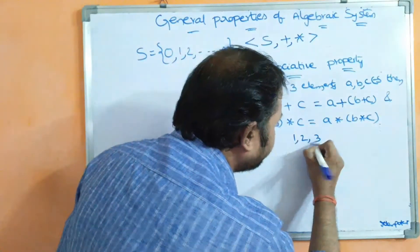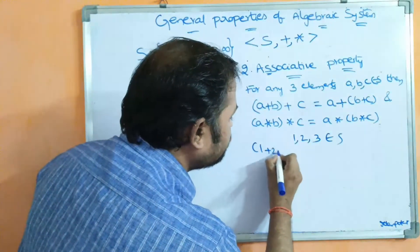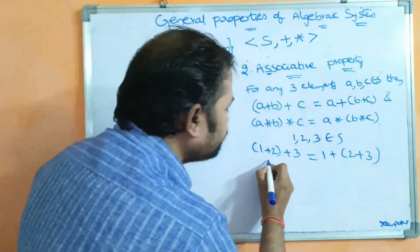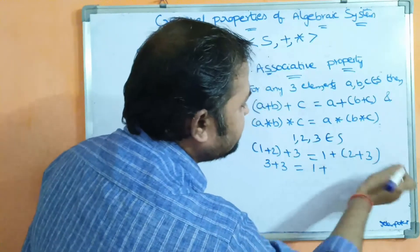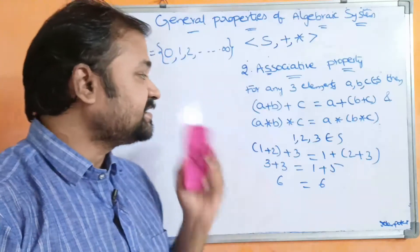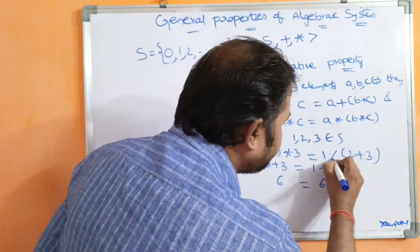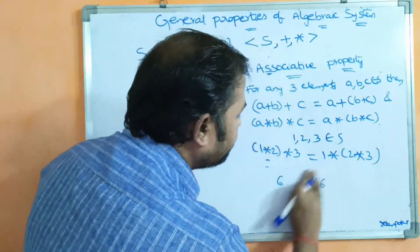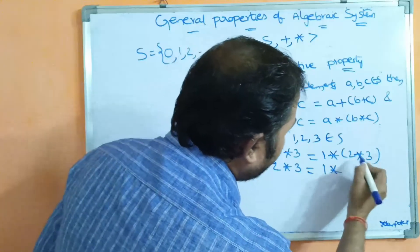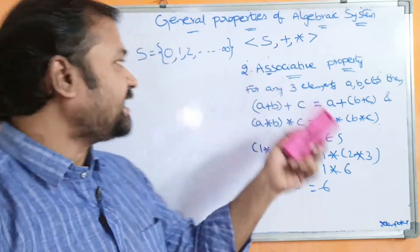Let us take 3 elements: a=1, b=2, c=3 belonging to S. Applying the first formula: (1+2)+3 = 3+3 = 6, and 1+(2+3) = 1+5 = 6. So 6 equals 6. For star operation: (1 into 2) into 3 = 2 into 3 = 6, and 1 into (2 into 3) = 1 into 6 = 6. So we can say it satisfies associative property.